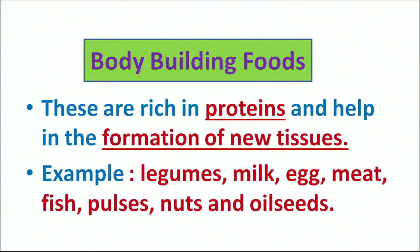The second category is body-building foods. Body-building foods are rich in protein and their function is in the formation of new tissues. As we have discussed, cells get damaged, so for the formation of new tissues we need proteins in our diet. Examples include legumes, milk, egg, meat, pulses, nuts and oil seeds.